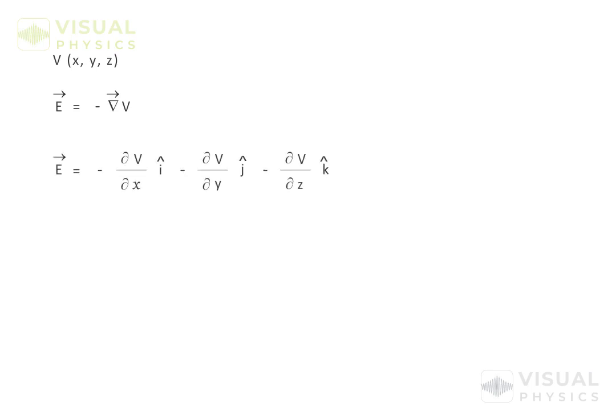If the function of potential along x, y, and z is known to us, then the field is given by the negative gradient of potential, which is represented by partial derivatives. This term means we take the derivative of potential with respect to x, assuming that y and z are constants.